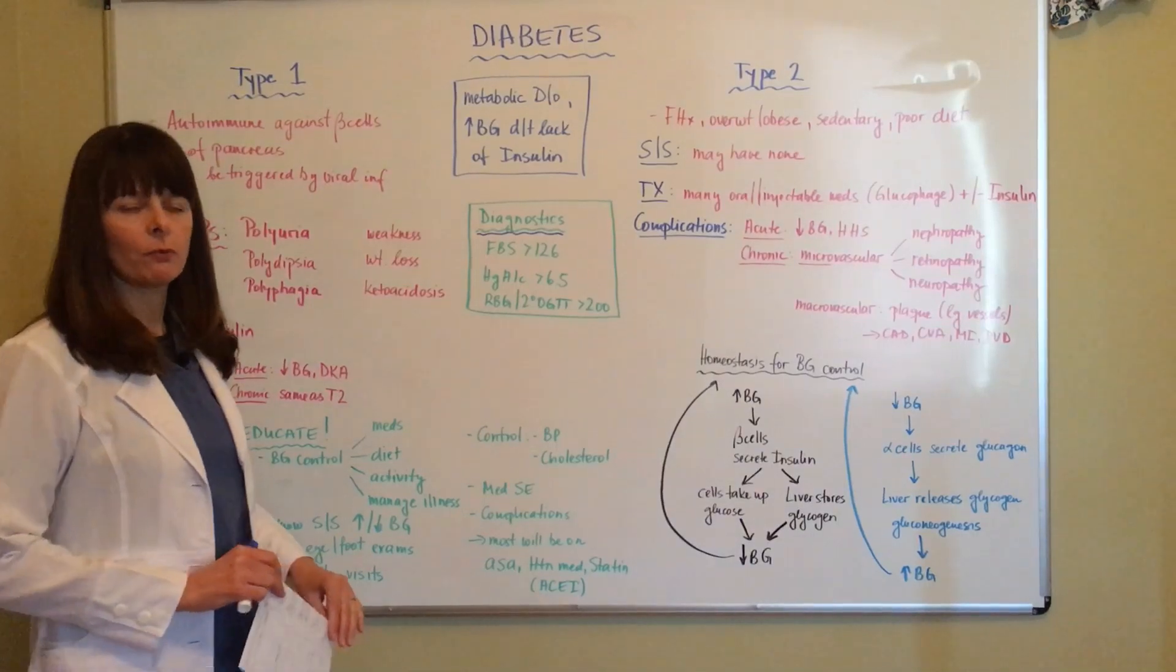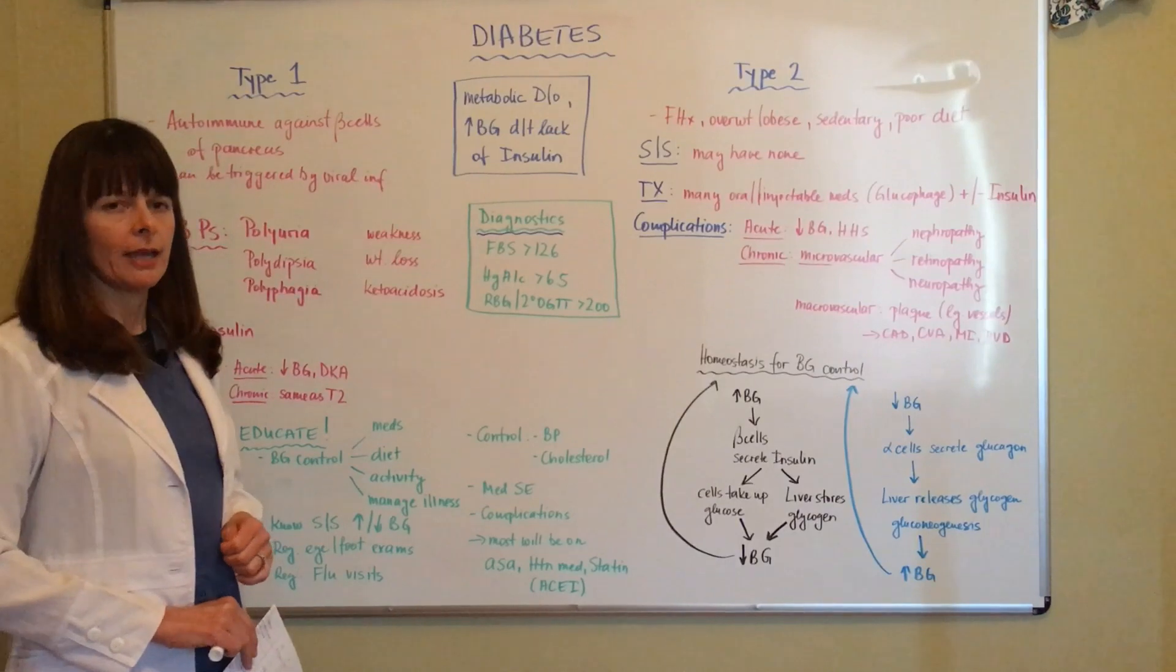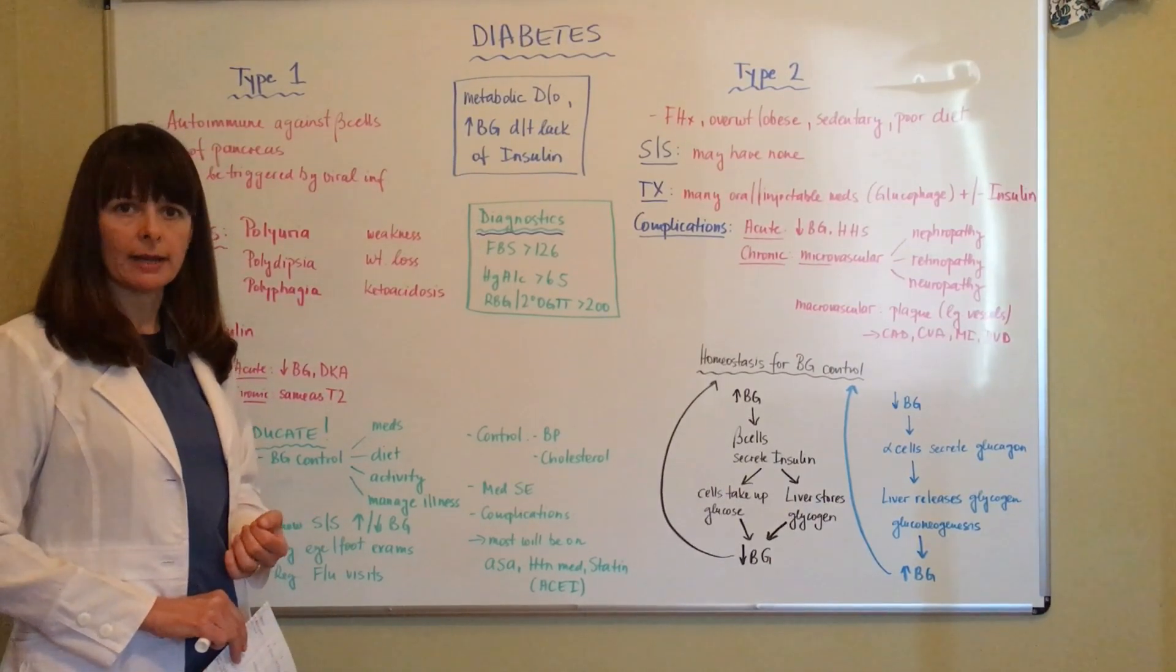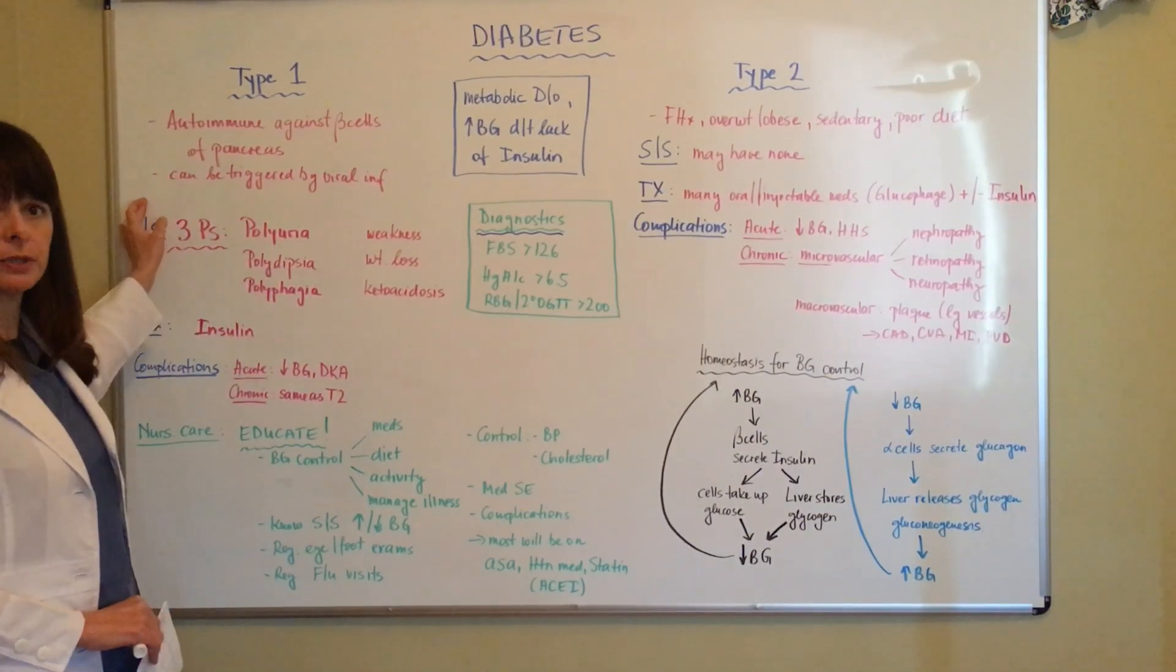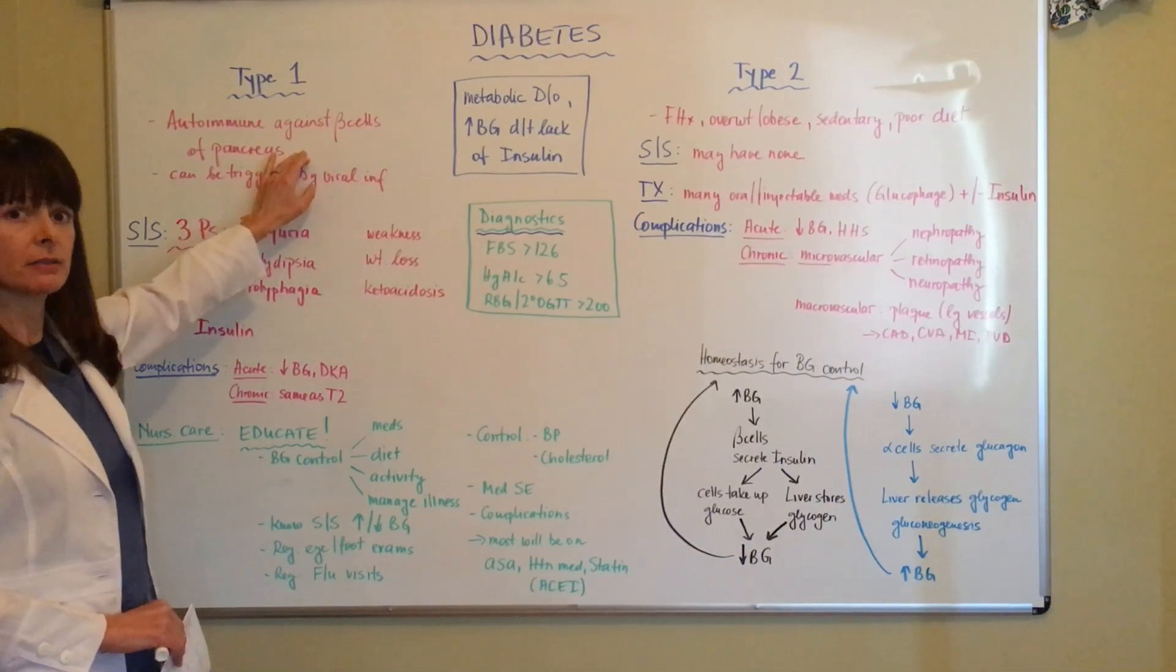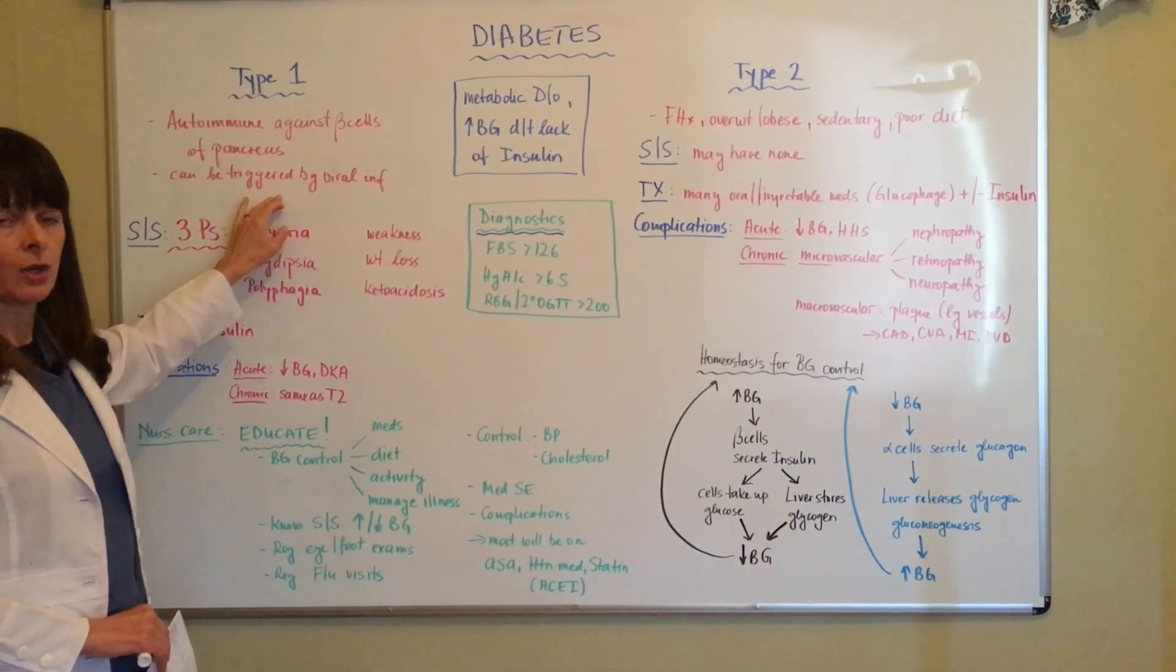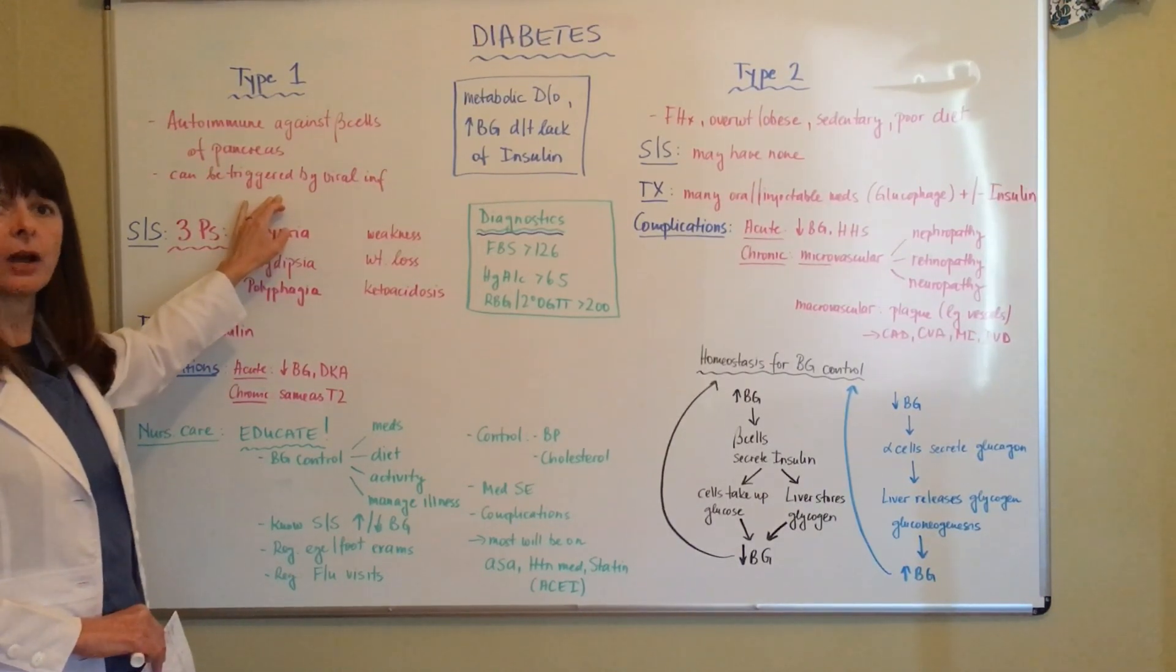For diabetes, there's basically a lack of insulin, and the reason that happens is different in type 1 and type 2. In type 1 diabetes, we're dealing with an autoimmune disorder against the beta cells of the pancreas, sometimes caused by viral infection. The patient's body attacks its own pancreas and beta cells, and therefore they are unable to secrete insulin.